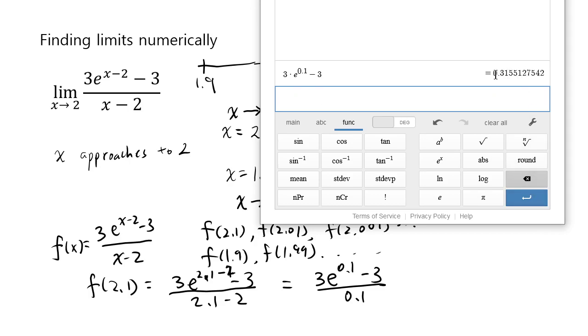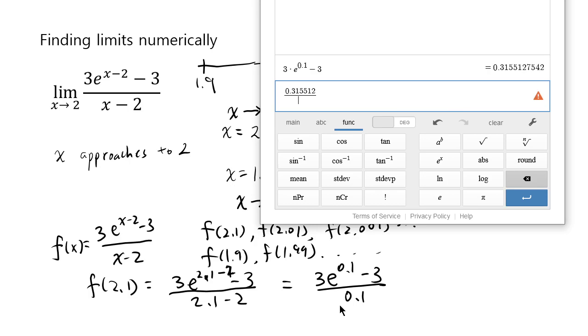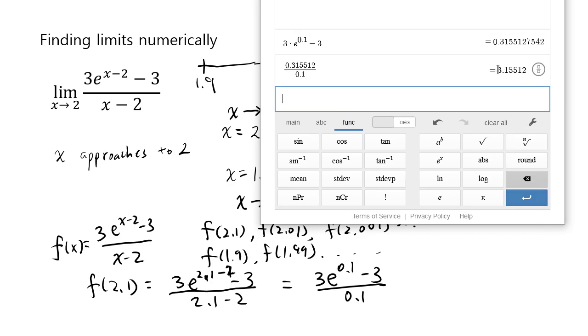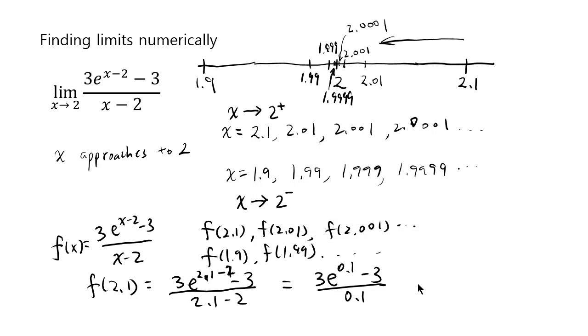And this value here is now divided by the denominator. Our denominator is 0.1, right? So I'm going to put that 0.1. And the resulting value is 3.155. So I'm going to copy that over here. That's our value.